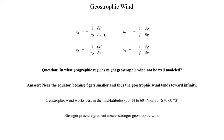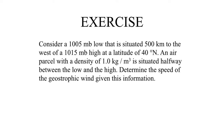That covers the conceptual side. Now let's introduce an exercise. Consider a 1005 millibar low situated 500 kilometers to the west of a 1015 millibar high at a latitude of 40 degrees north. An air parcel with a density of 1 kilogram per cubic meter is situated halfway between the low and the high. Determine the speed of the geostrophic wind given this information. Go ahead and pause the video and take about 5 to 10 minutes to attempt to arrive at an answer.